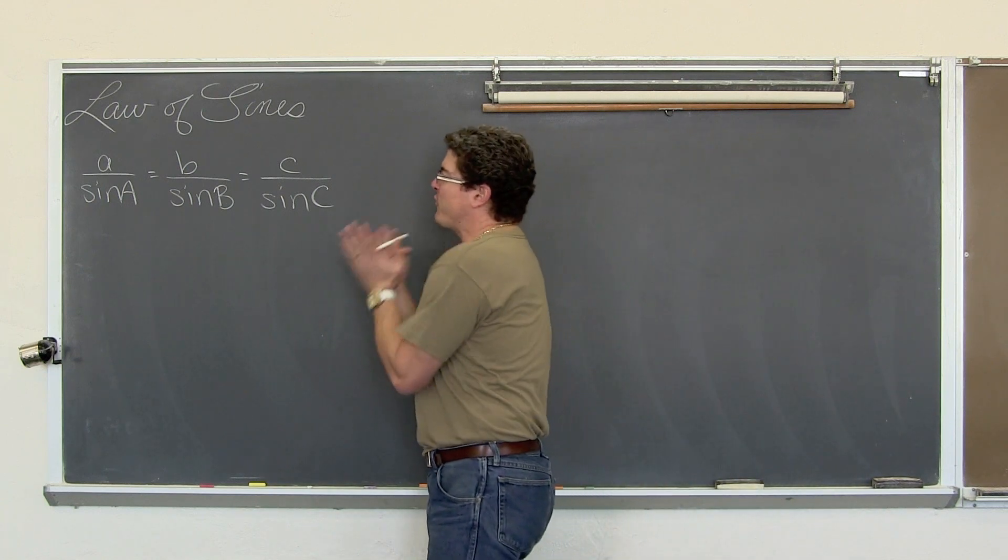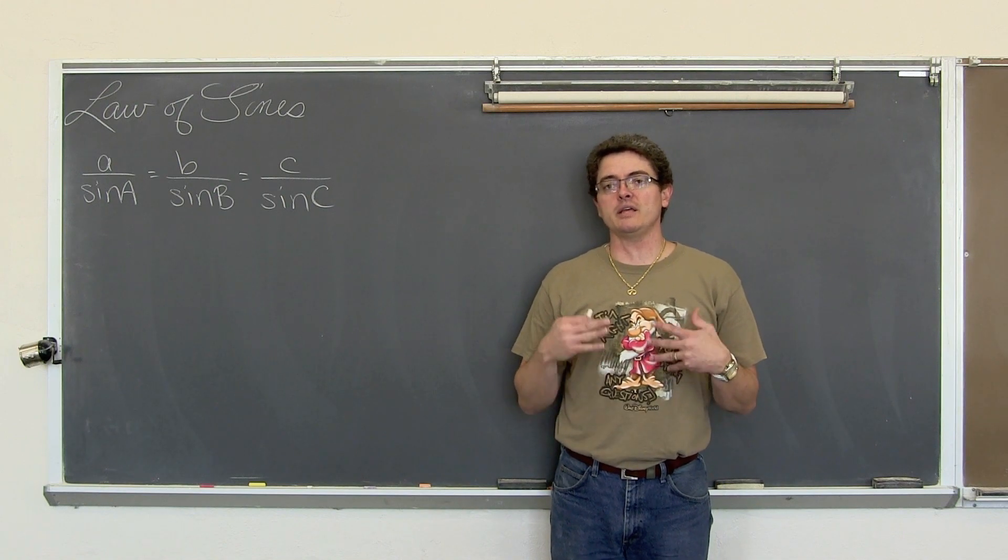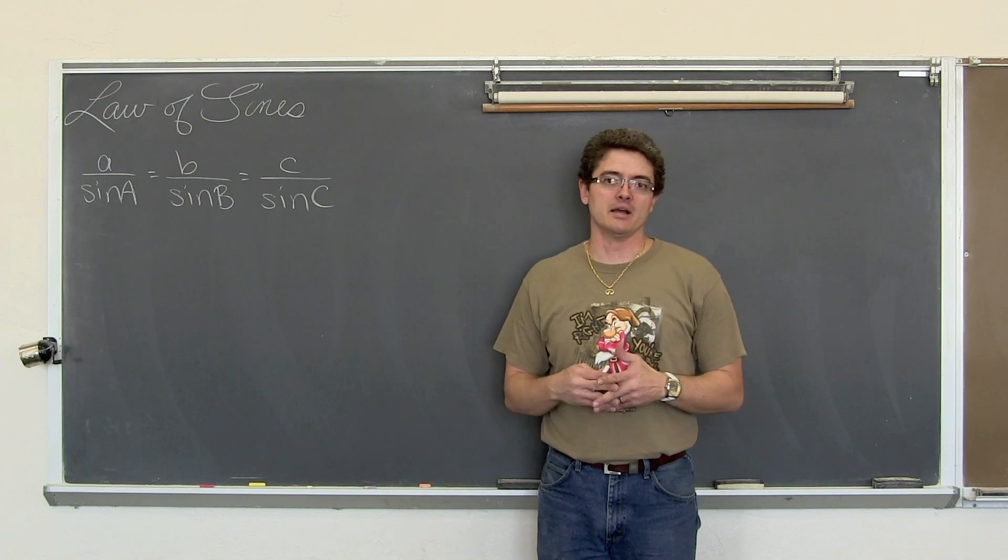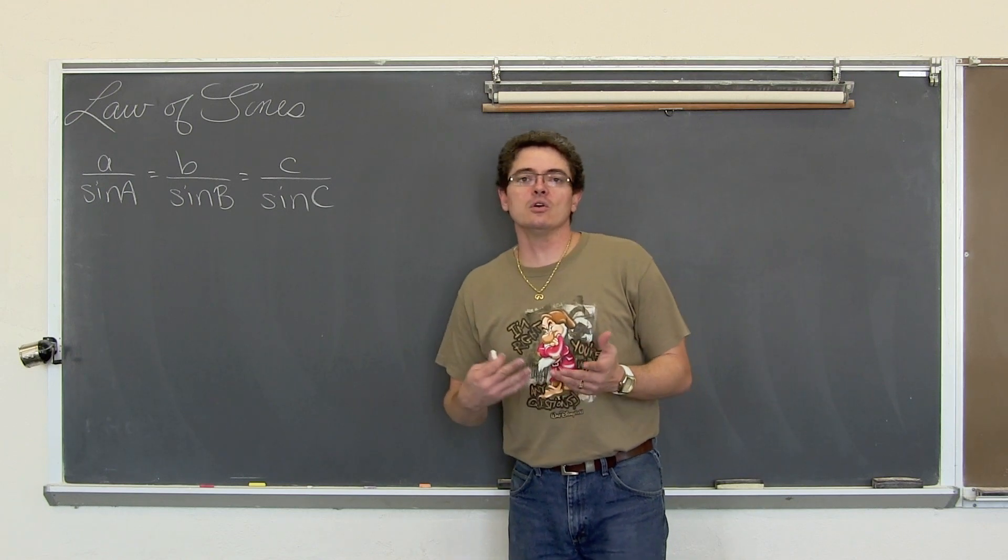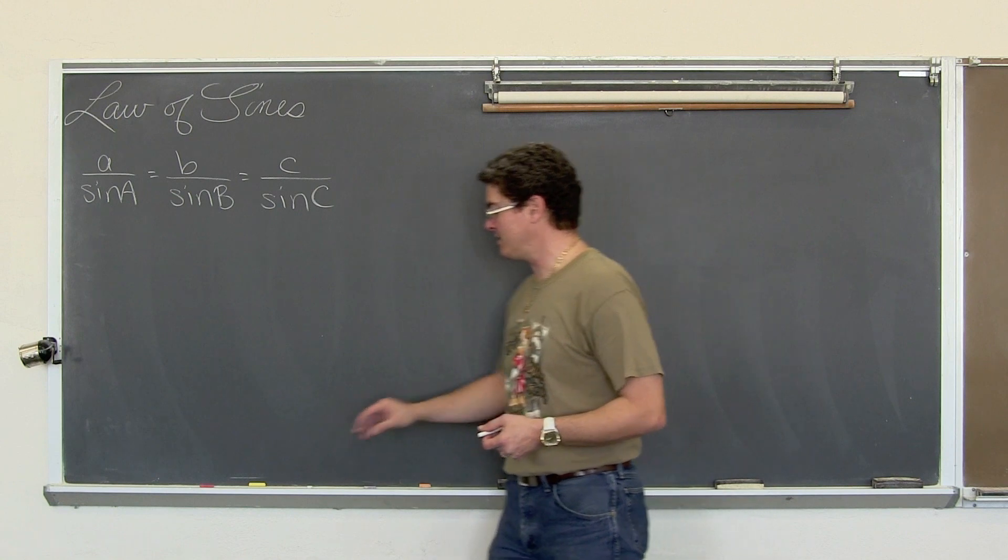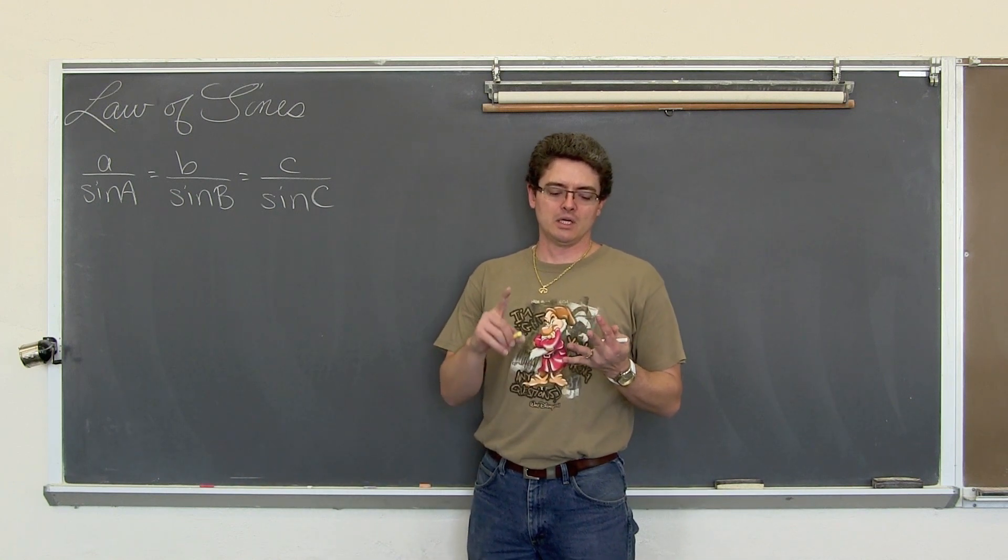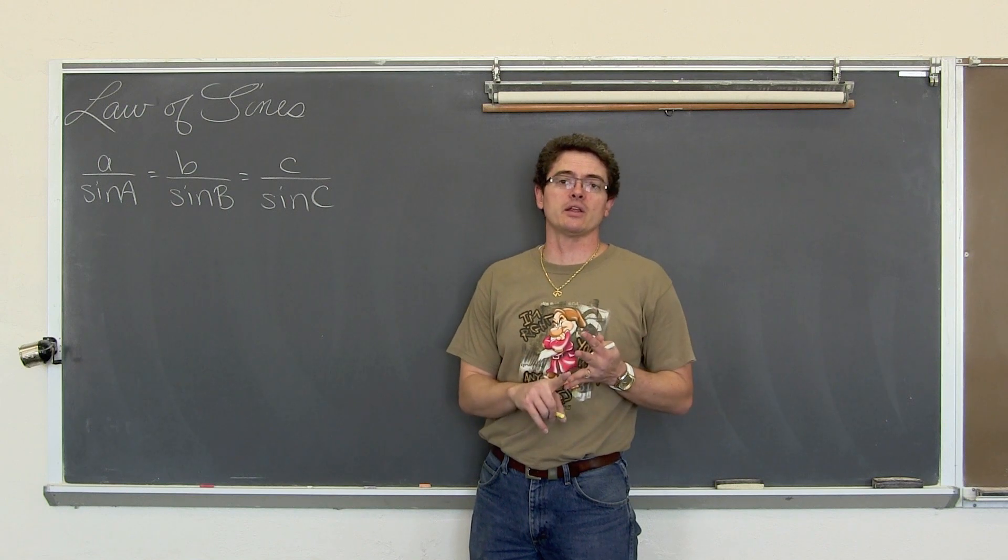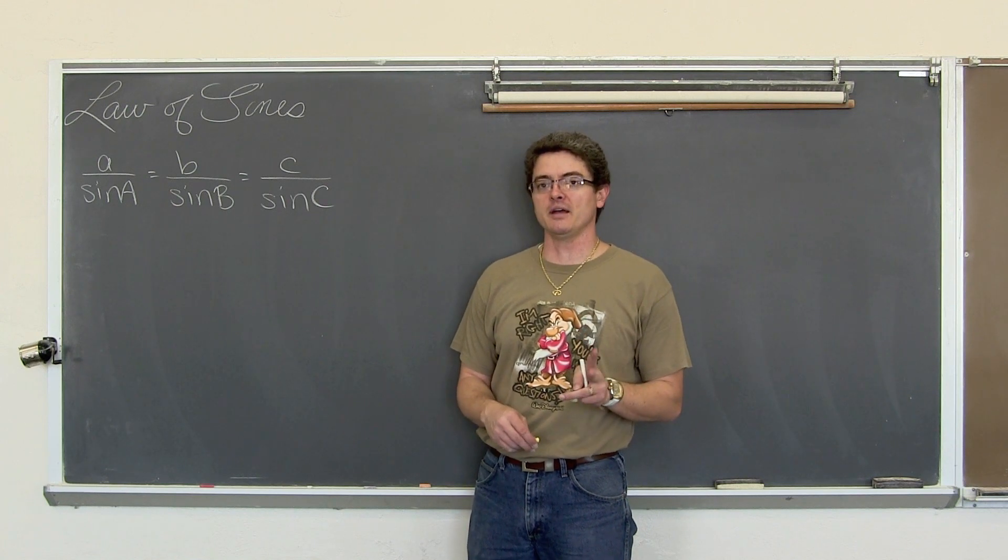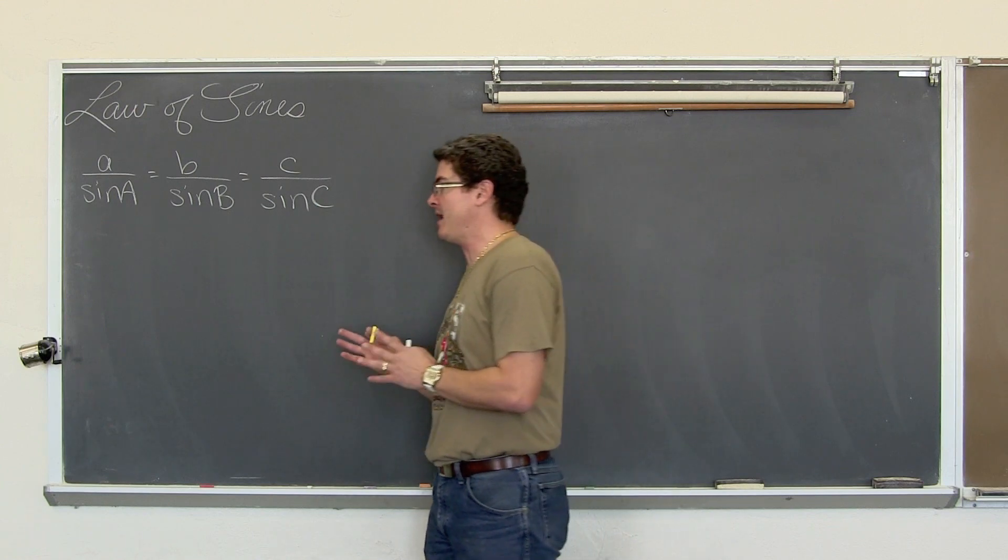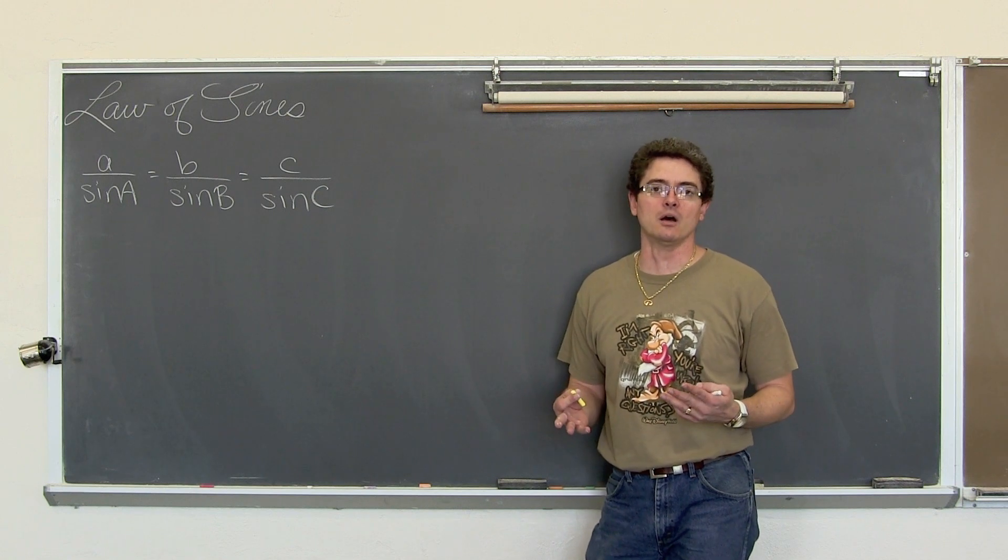Before we get started though, there is another video after this that is going to be the ambiguous case for the Law of Sines. You are going to be given information about a triangle and you need to understand if that information sets up one triangle, no triangle at all, or two answers.